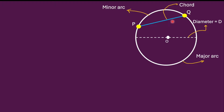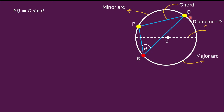Now I consider a point R on the major arc and join R to point P and also to point Q. The angle at point R is denoted by theta. The chord's theorem states that the length of chord PQ equals the diameter times sine of the angle theta.